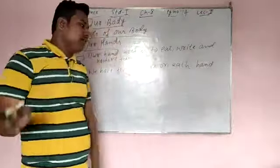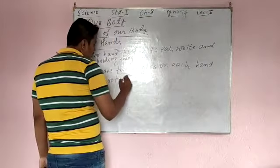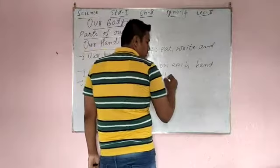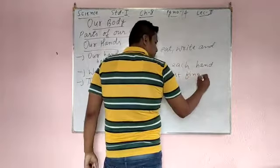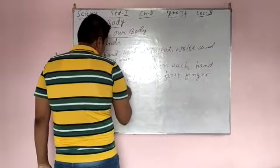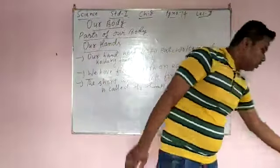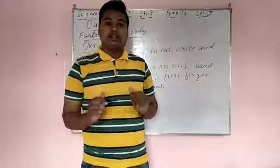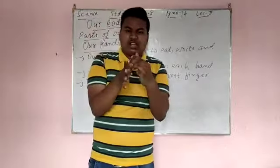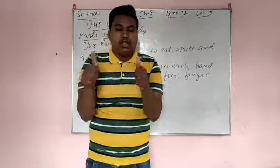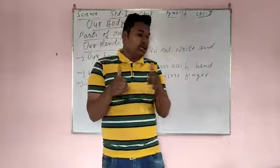In this hand 5 and in this hand also 5. The first finger is short and thick, and it is called the thumb. The thumb is very thick — thick means fat. It is fatter than all the other fingers. This short and thick finger is the first finger of both hands and is known as the thumb.